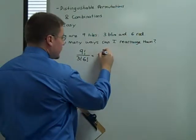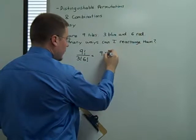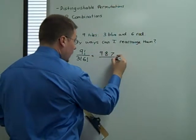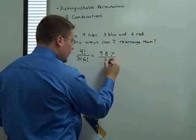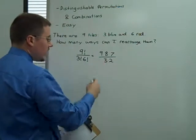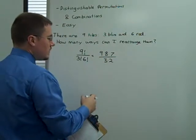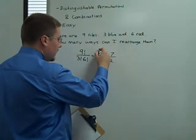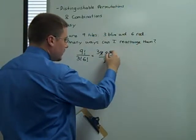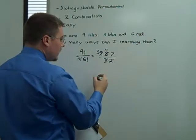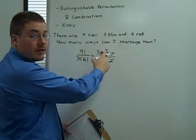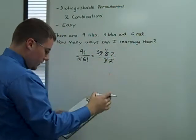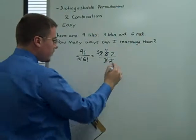Nine factorial over six factorial is nine times eight times seven, all over three times two. Now six doesn't go into any of these, so we have to break it up piece by piece. The three goes into the nine to become a three. The two goes into the eight to become a four. So we have three times four times seven, which is 84.